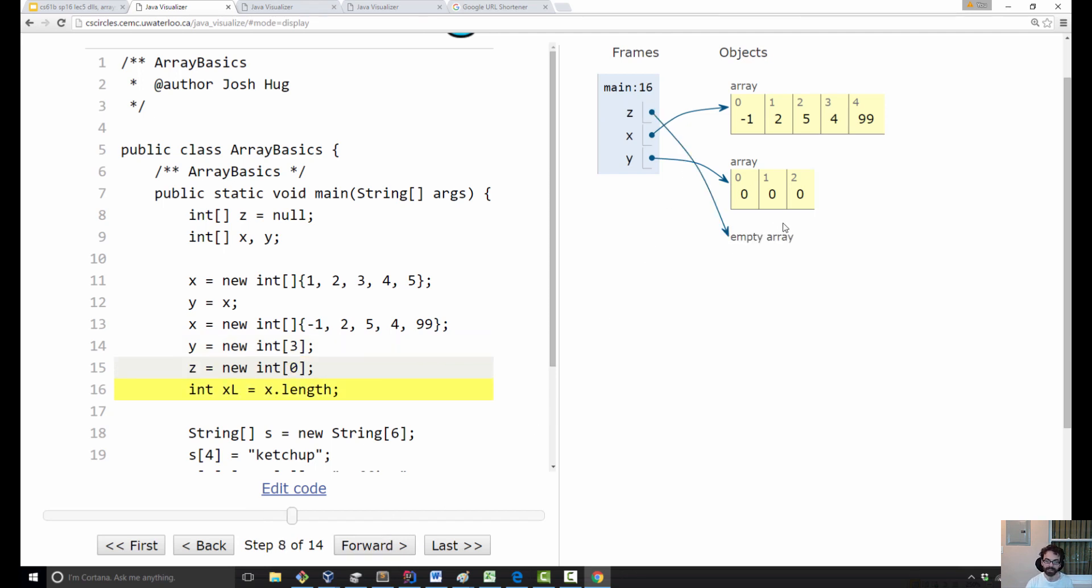This is just for fun. So when I run this line, I get an array of size zero. So there are no boxes and an int, presumably, that says zero somewhere. And so Z just points at this thing.